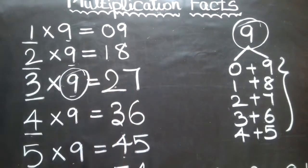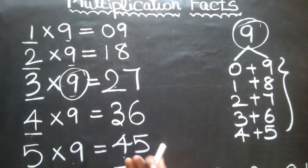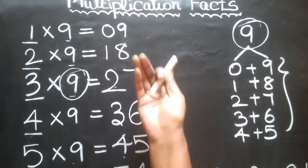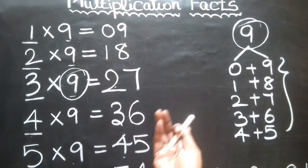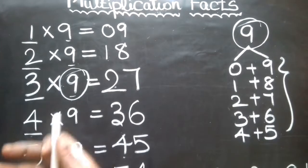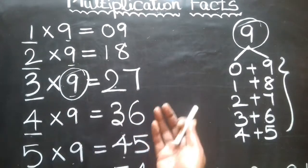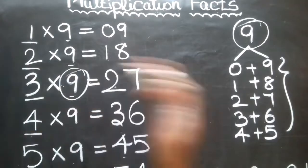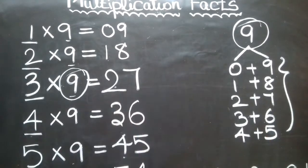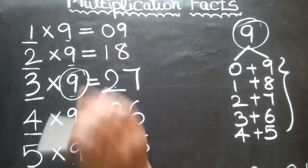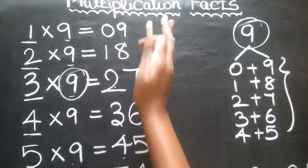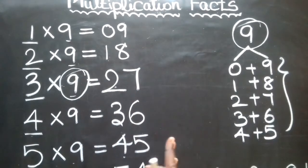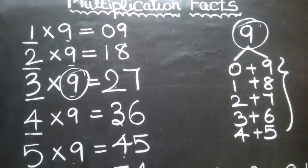So in the trick for the 9 times table, you can apply this up to 10 times. The multiplication facts were explained first. That's why we tell you this trick. Thank you so much for watching this video.